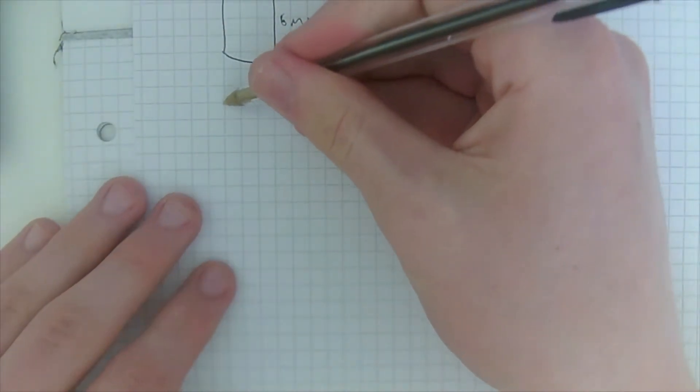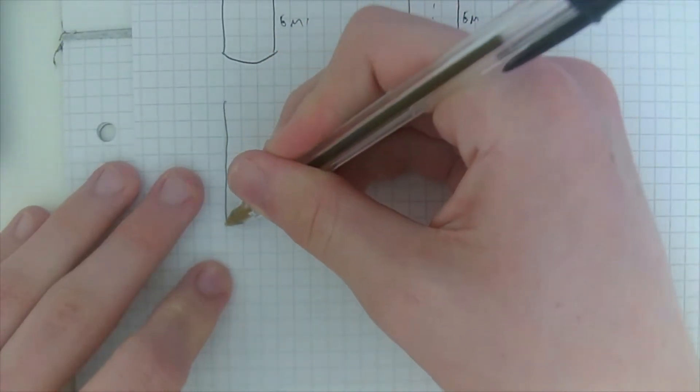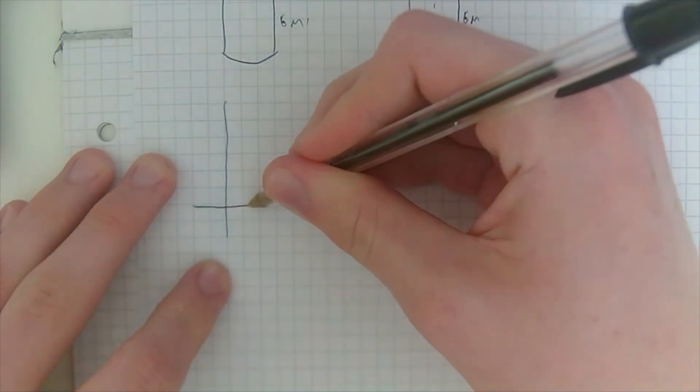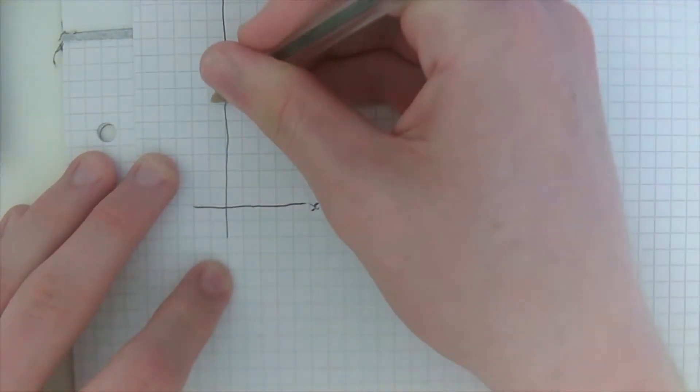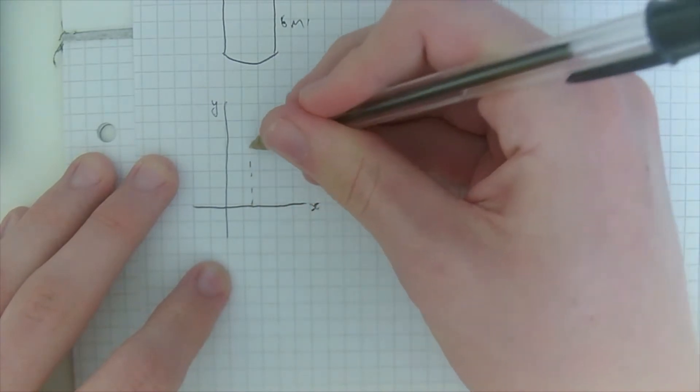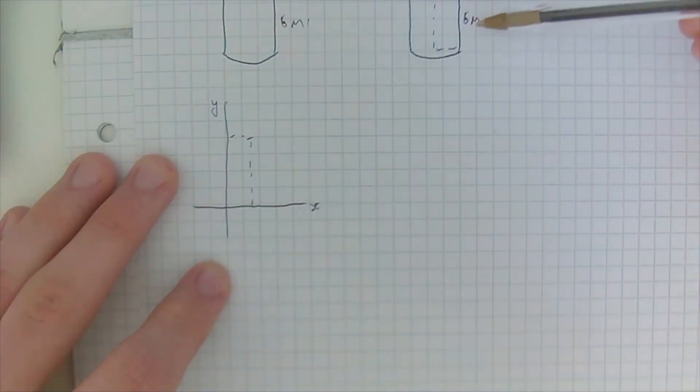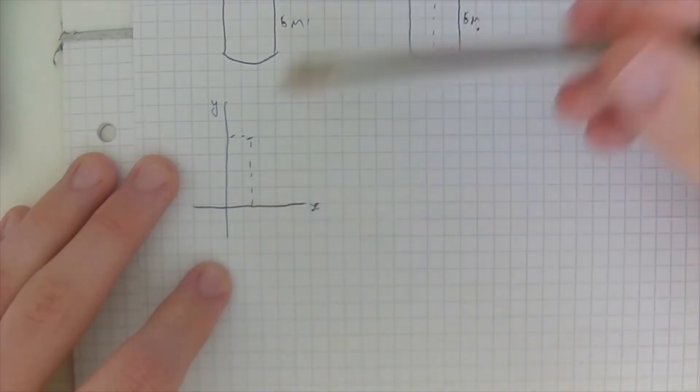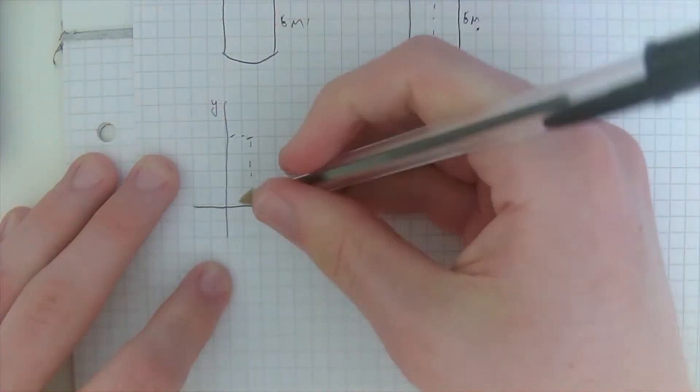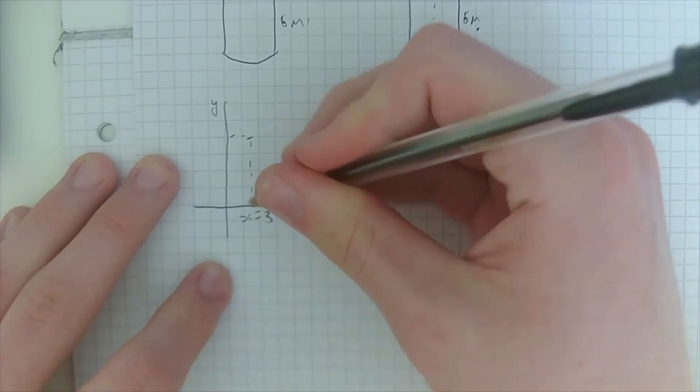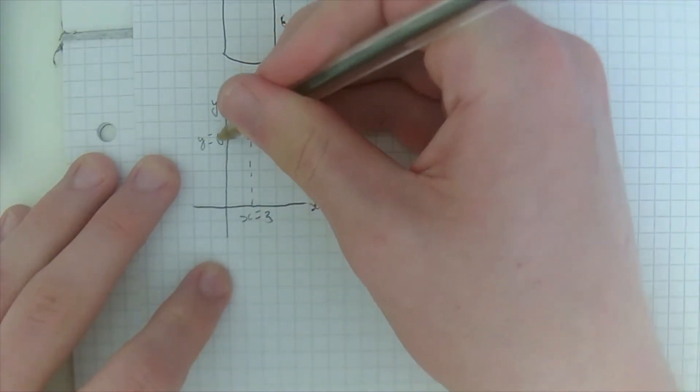So next we're just going to draw a graph here with an x-axis and a y-axis. And I'm just going to put that rectangle on the graph and we'll see that this line here is the line x equals three and this line here is y equals six.